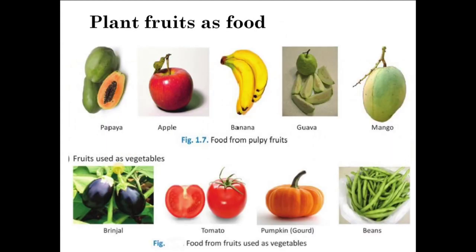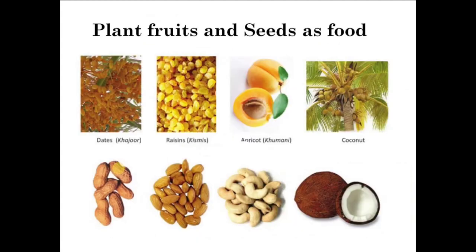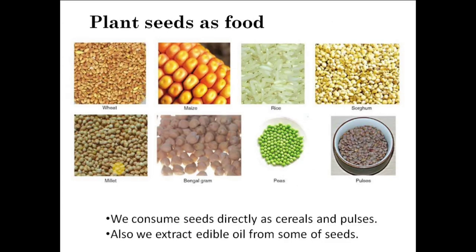Fruits that we eat as food include papaya, apple, banana, guava, and mango. We also consume vegetables which are in fact fruits — such as tomato, pumpkin, beans, and ladyfinger. Some dry fruits we consume are dates, raisins, apricots, and coconut. We also obtain seeds from plants. Some seeds we consume include groundnuts, almonds, cashew nuts, wheat, maize, and rice as cereals, and Bengal gram, beans, and peas as pulses.